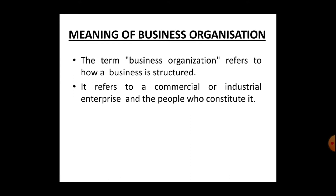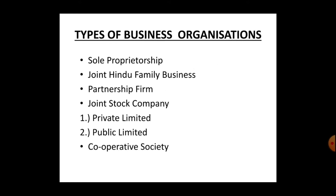The basic categories of business organization are sole proprietorship, joint Hindu family business, partnership firm, joint stock companies, private limited or public limited company, cooperative societies, etc. Each type of business organization has benefits as well as disadvantages.